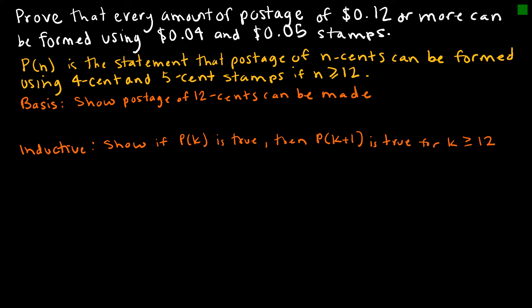Since I'm starting with 12, that's going to be my basis step. To make 12-cent postage I would use three four-cent stamps, which gives me 12 cents, and therefore I've shown the basis is true.